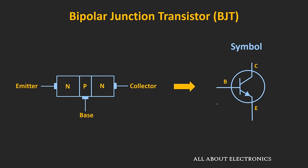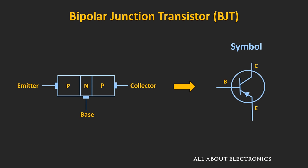Regarding the symbol, this is the symbol of the NPN transistor, with three terminals: the base, collector, and emitter. The arrow indicates the direction of current during the active region of operation. In case of the NPN transistor, the current flows from the base towards the emitter. For the PNP transistor, the symbol is similar but the direction of the arrow is reversed, so the current flows from the emitter towards the base region.